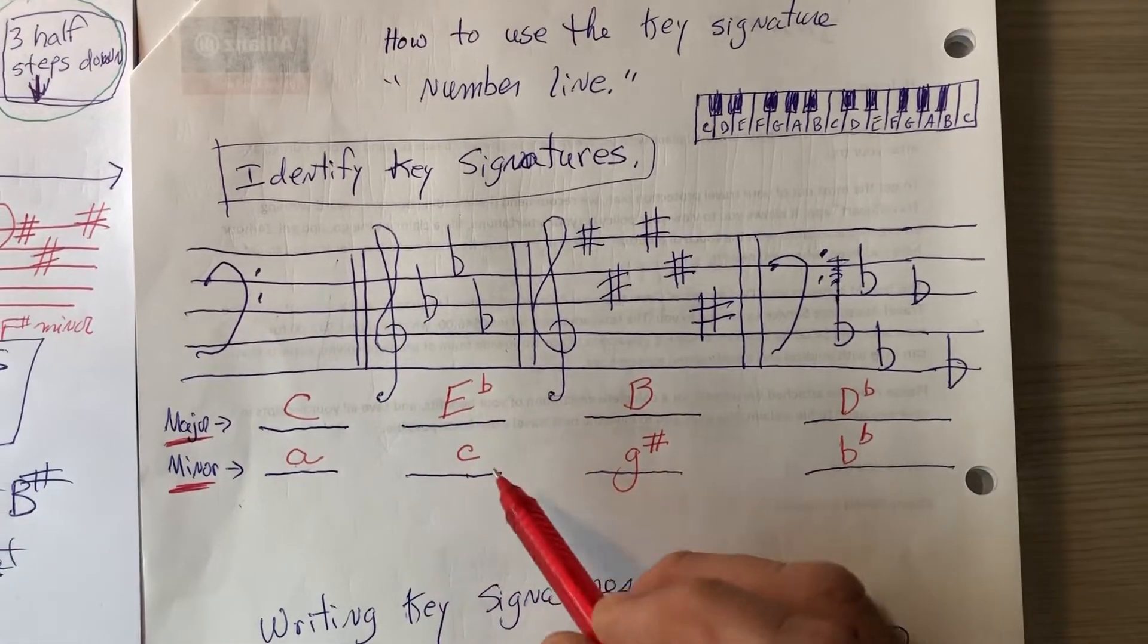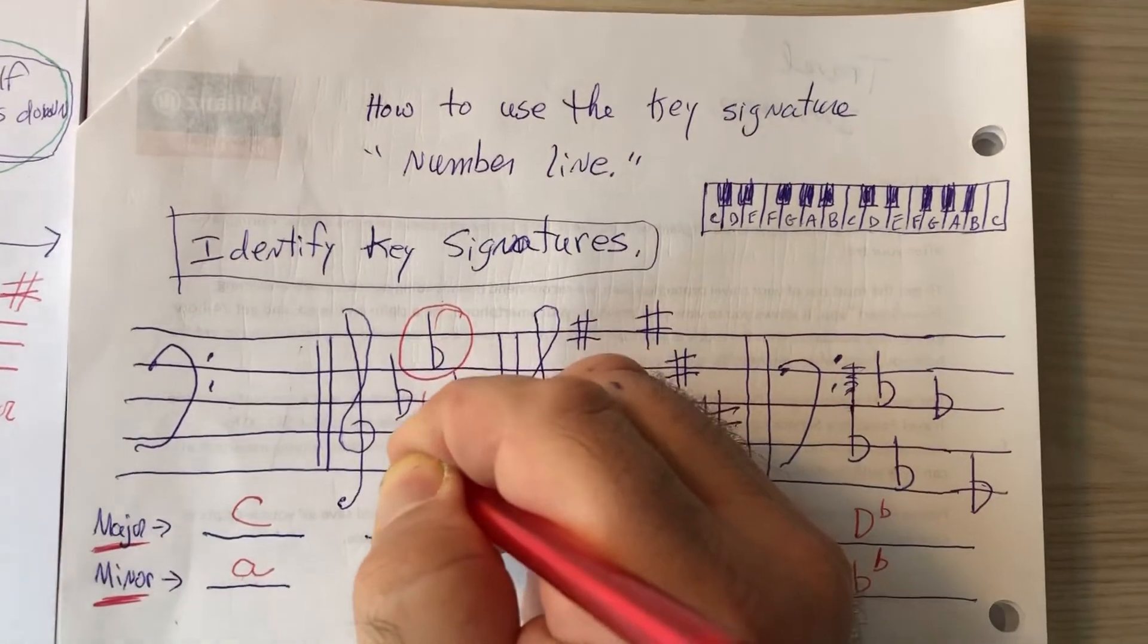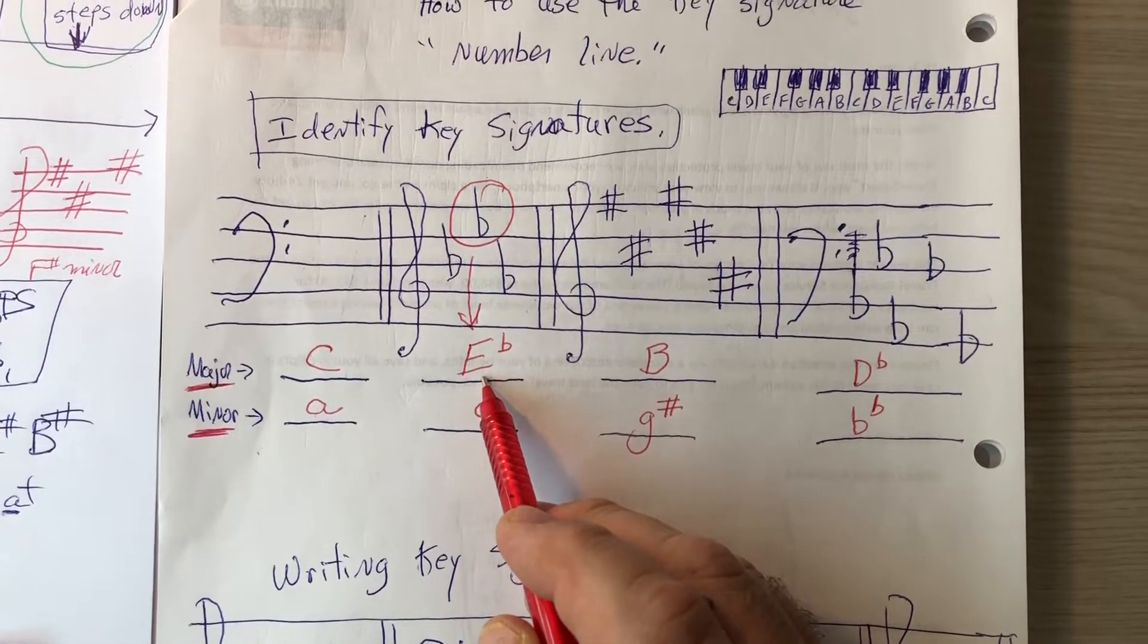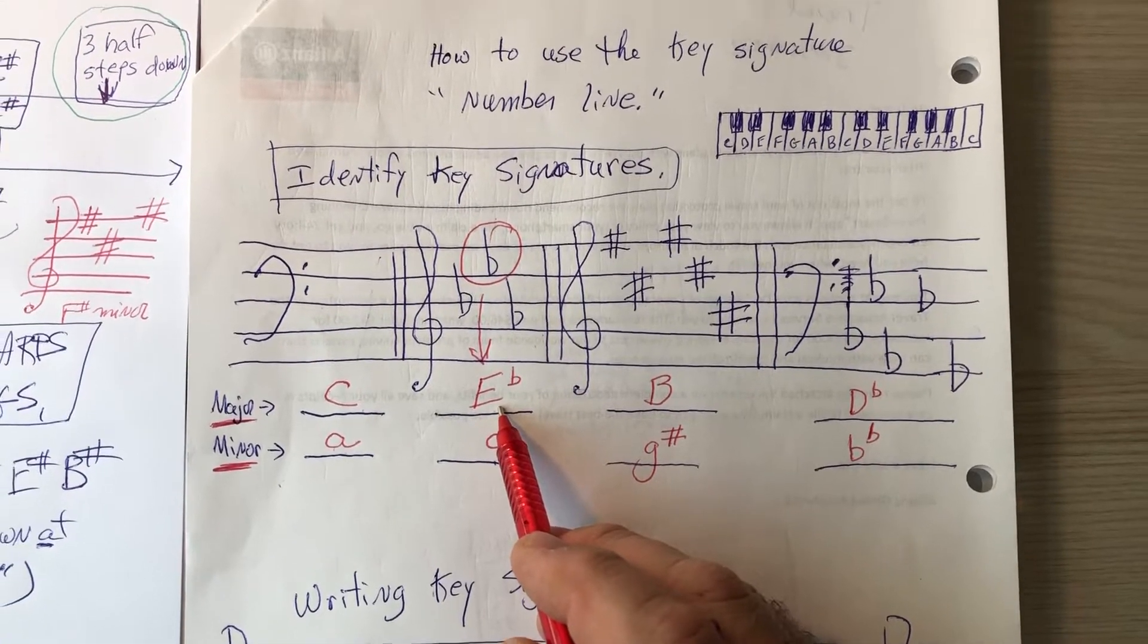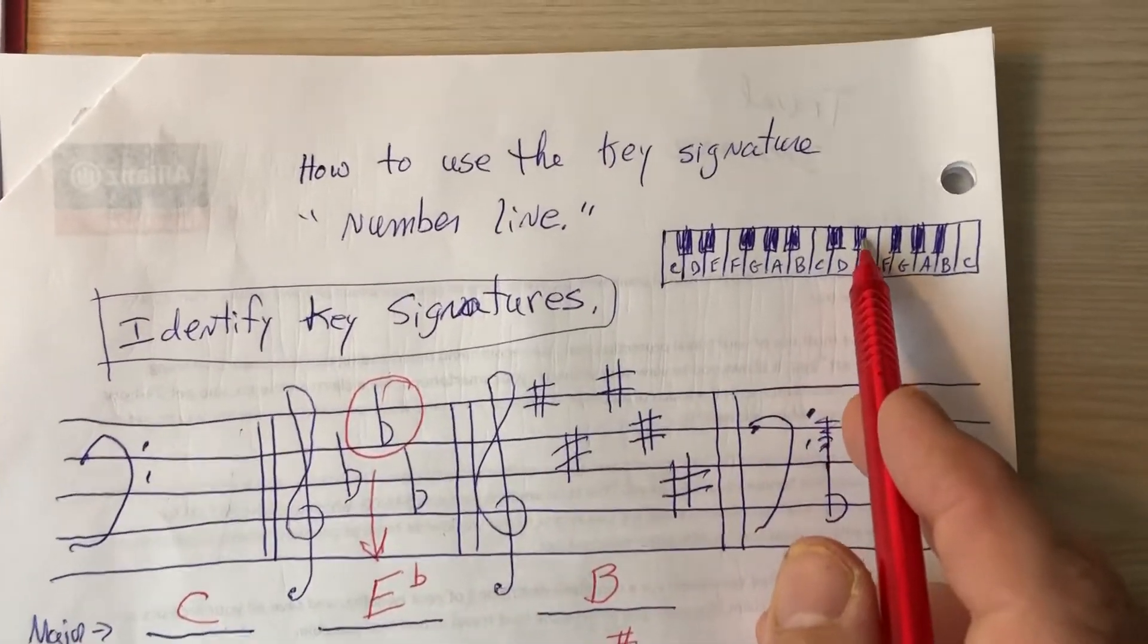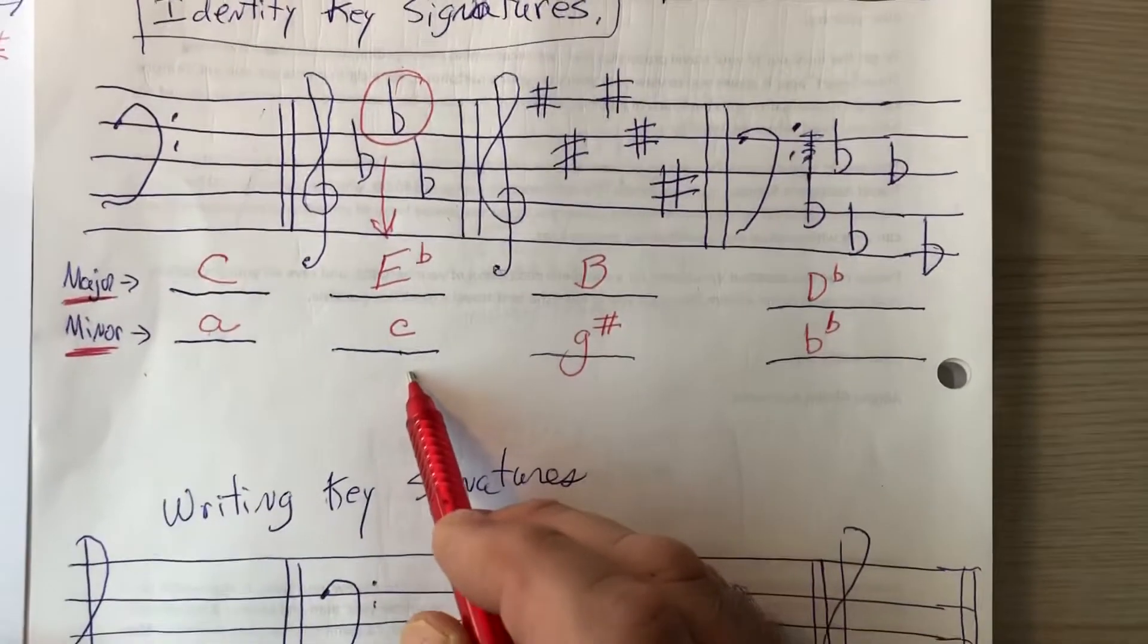The rules dealing with flats tell us that the flat before last tells us the name of the major key signature, which indeed it does. And remember when going from major to minor, you go down three half steps. So you would find E flat on your keyboard, one, two, three, you end up on C, C minor.